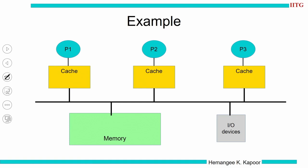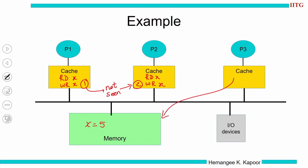Let us see how the problem arises. Memory has a variable x. If processor p1 does a read of x, x comes into its cache. Later p1 might do a write of x. Similarly, p3 might also do a read and write of x. These two writes by two different processors happen independently, so values written by p1 are not seen by p2. When p3 goes to memory to read, it gets some old value — not the one changed by p1 and p2 — because of private caches.